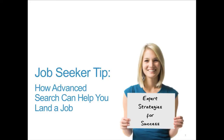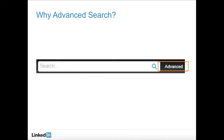First, let's talk about why you would want to use advanced search. Advanced searches on LinkedIn help you zero in on exactly the kinds of people who can be connectors, guides, or sources of information in your job search. With advanced search, you have the ability to find someone who has a specific title, works at a company of interest, or lives nearby all in one search. And that's just the beginning. Using advanced search will help you unlock the power of your network by showing you exactly who can help you get to the next step.